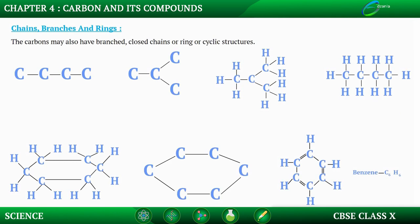Next, let us learn about chains, branches, and rings. Carbon compounds like methane, ethane, and propane — which are saturated compounds — have one, two, and three carbons respectively. Such chains of carbon can contain up to ten carbon atoms. But let us take another look at butane. If we make the carbon skeleton with four carbon atoms, we see that it has two kinds of structure.